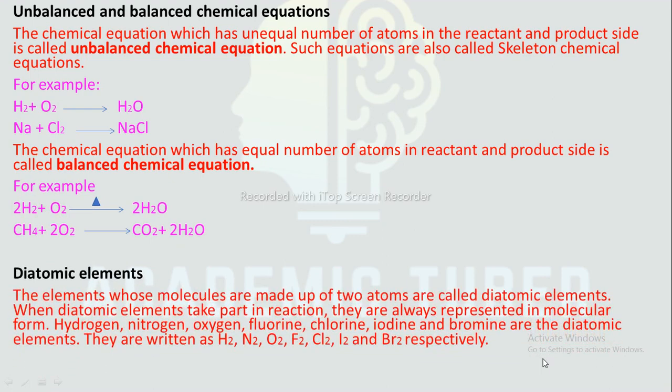Diatomic elements: The elements whose molecules are made up of two atoms are called diatomic elements. When diatomic elements take part in a reaction, they are always represented in molecular form. Hydrogen, nitrogen, oxygen, fluorine, chlorine, iodine, and bromine are the diatomic elements. They are written as H₂, N₂, O₂, F₂, Cl₂, I₂, and Br₂ respectively.